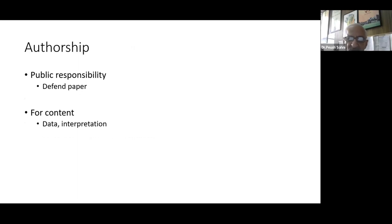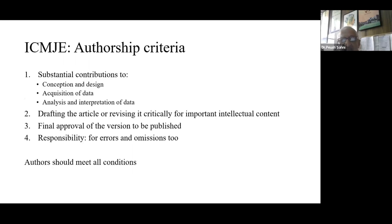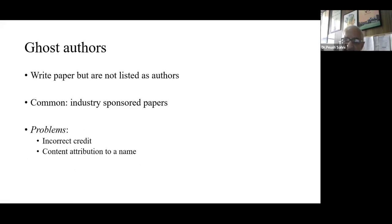Now, a little bit about authorship. Authorship is public responsibility to defend the paper you are publishing — both the content, the data, and its interpretation. The International Committee of Medical Journal Editors has four authorship criteria: (1) substantial contributions to conception and design, or acquisition of data, or analysis and interpretation of data; (2) drafting the article or revising it critically for important intellectual content; (3) final approval of the version to be published; and (4) taking responsibility for errors and omissions. An author must meet all these criteria.